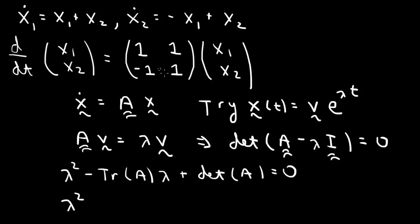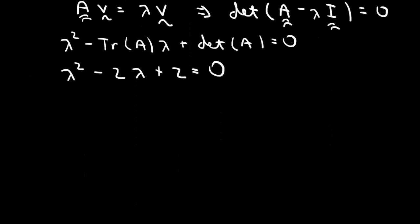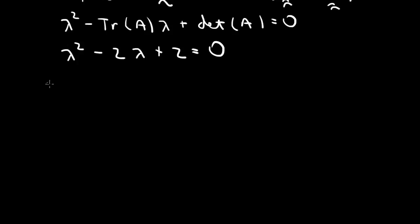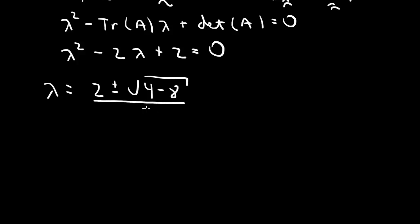In our case: lambda squared — the trace is 2, so minus 2 lambda — and the determinant is 1 times 1 minus minus 1, which is 2, so plus 2 equals 0. Using the quadratic formula, lambda equals (2 plus or minus the square root of 4 minus 8) over 2. The square root of minus 4 is 2i, the 2 cancels, giving lambda equals 1 plus or minus i.